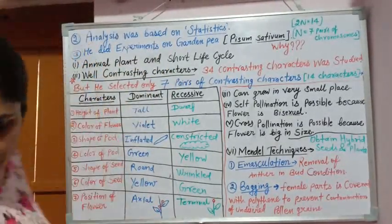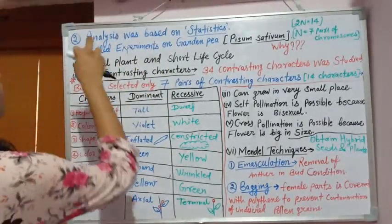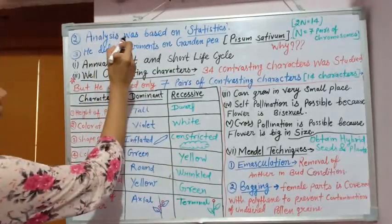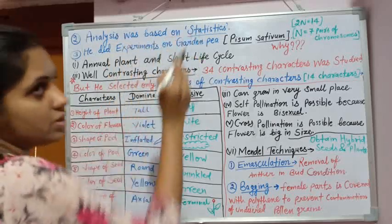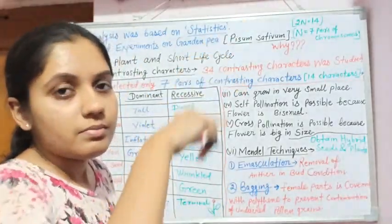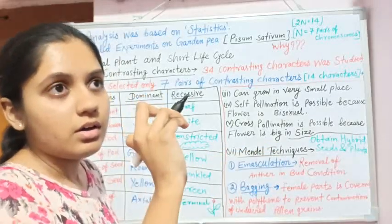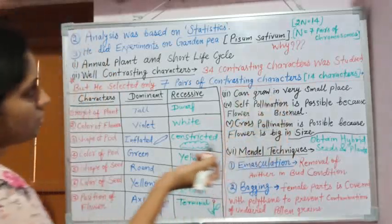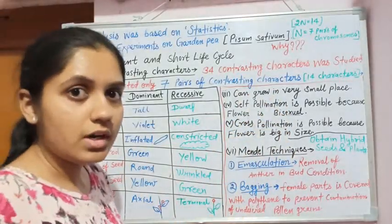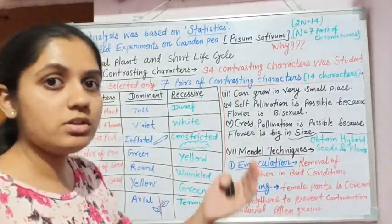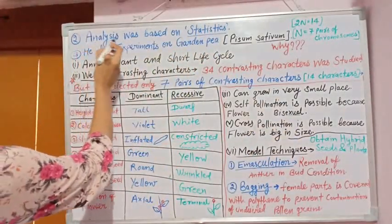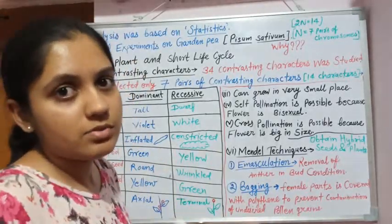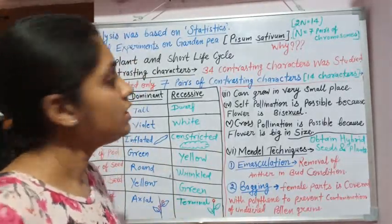The second reason for Mendel's success is that his analysis was based on statistics. He used statistical notation like capital T to represent traits. His experiments were based on statistics, but the other scientists' experiments were not based on statistics.